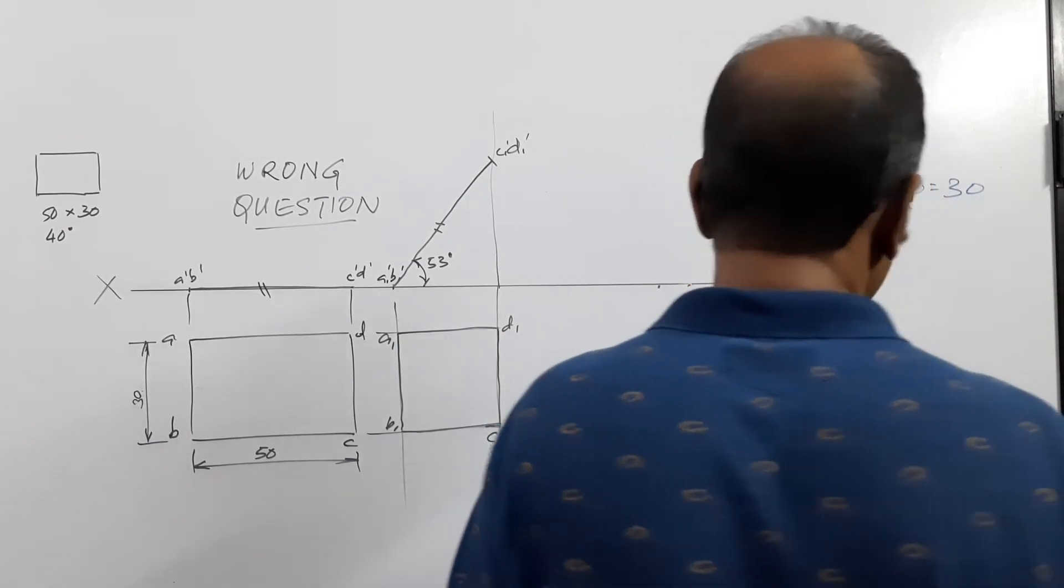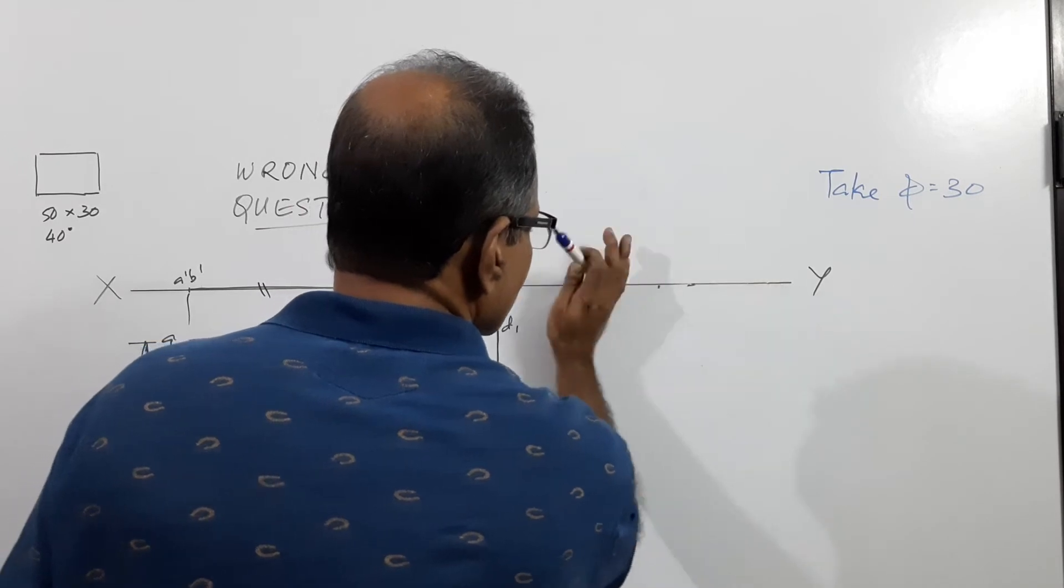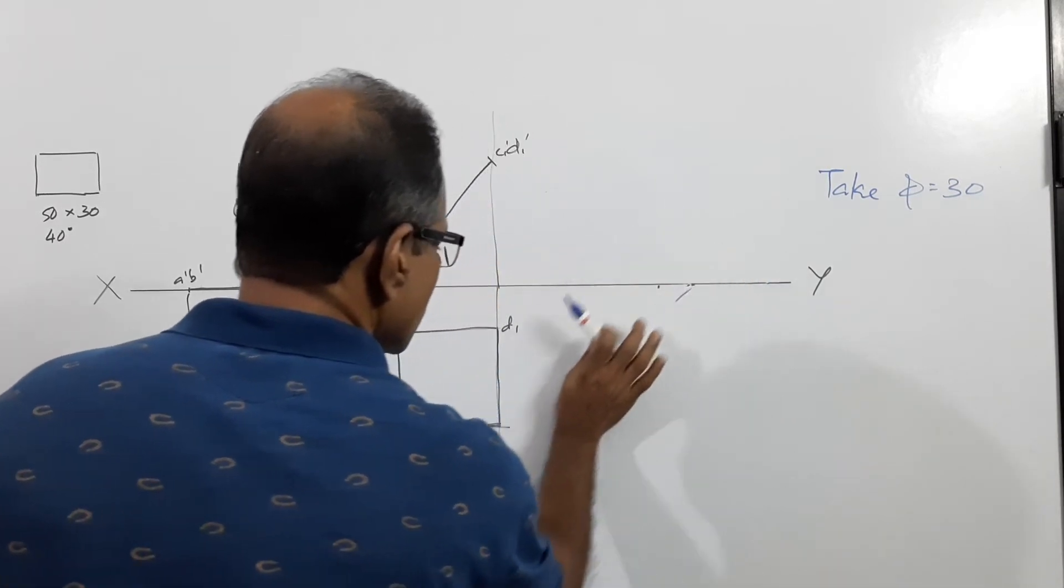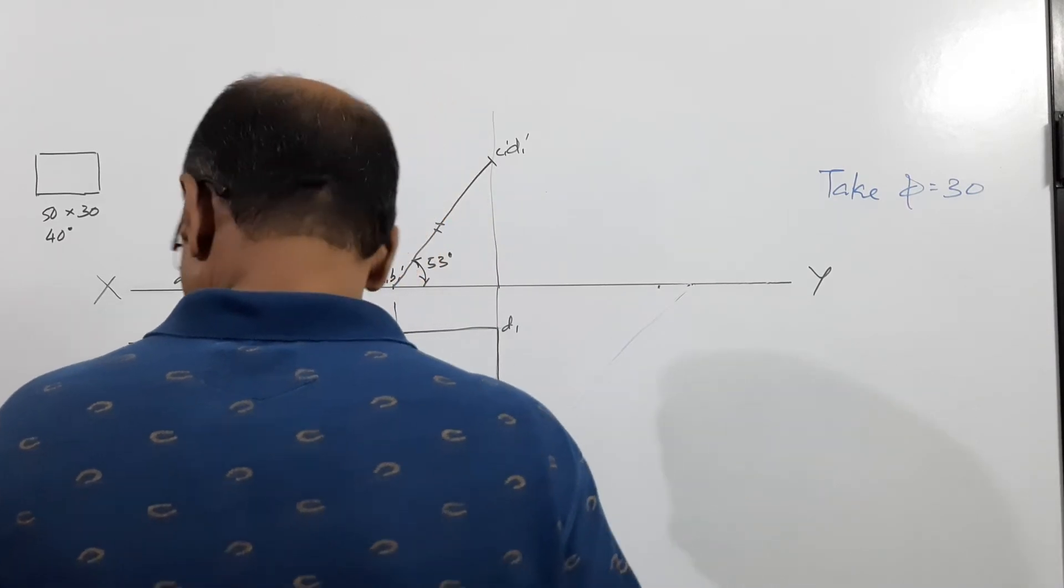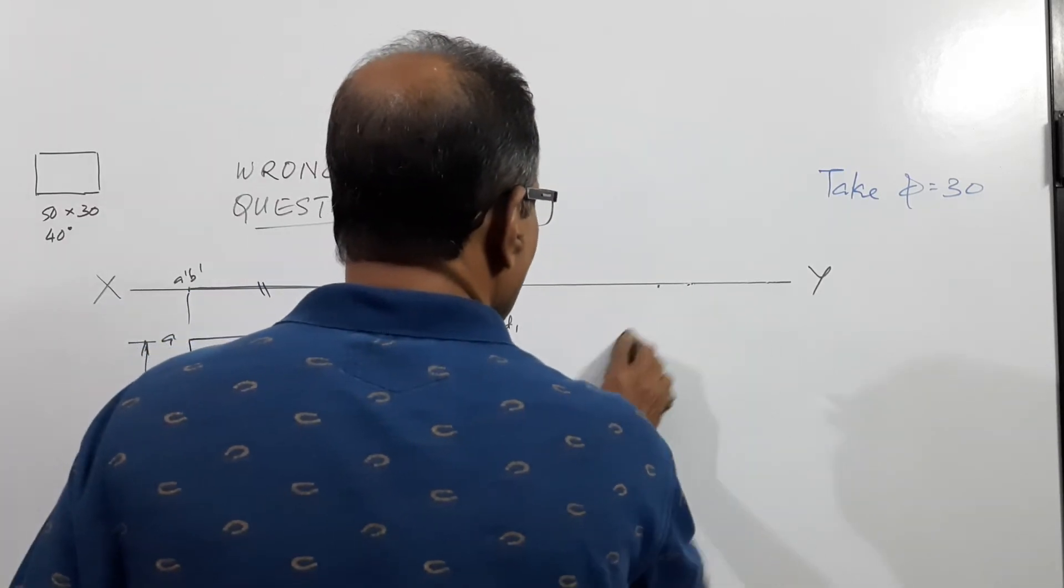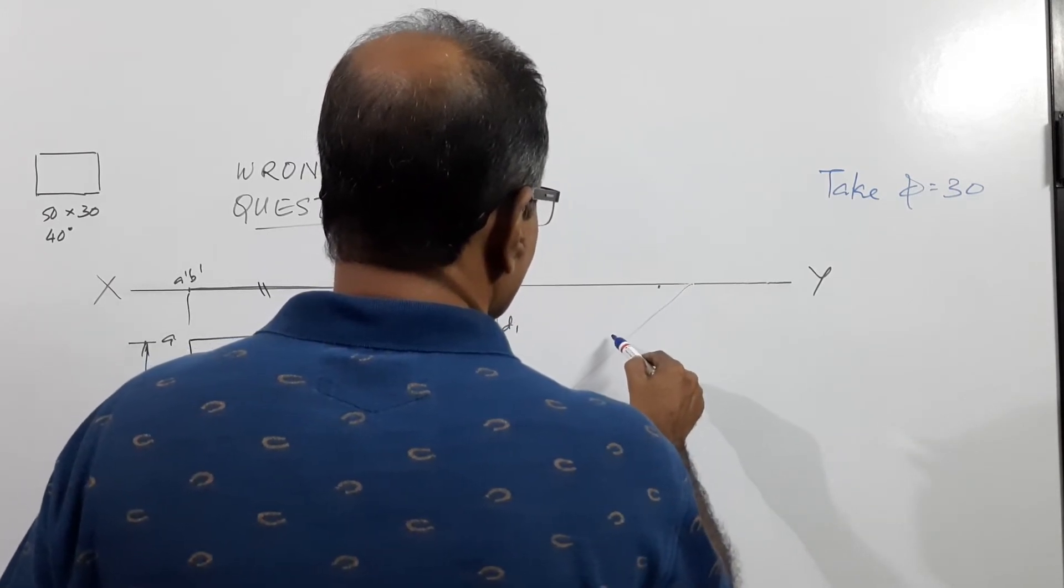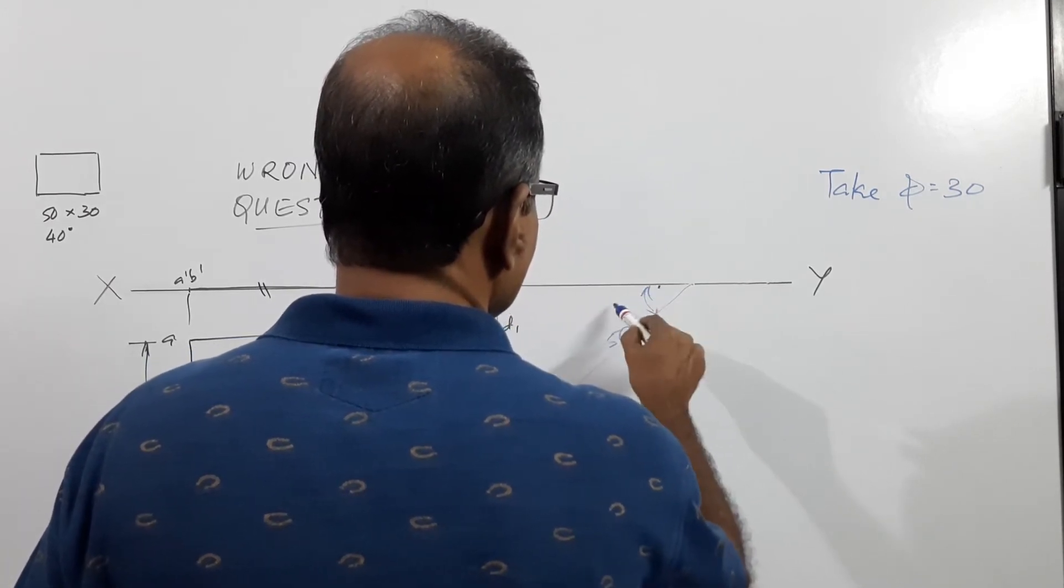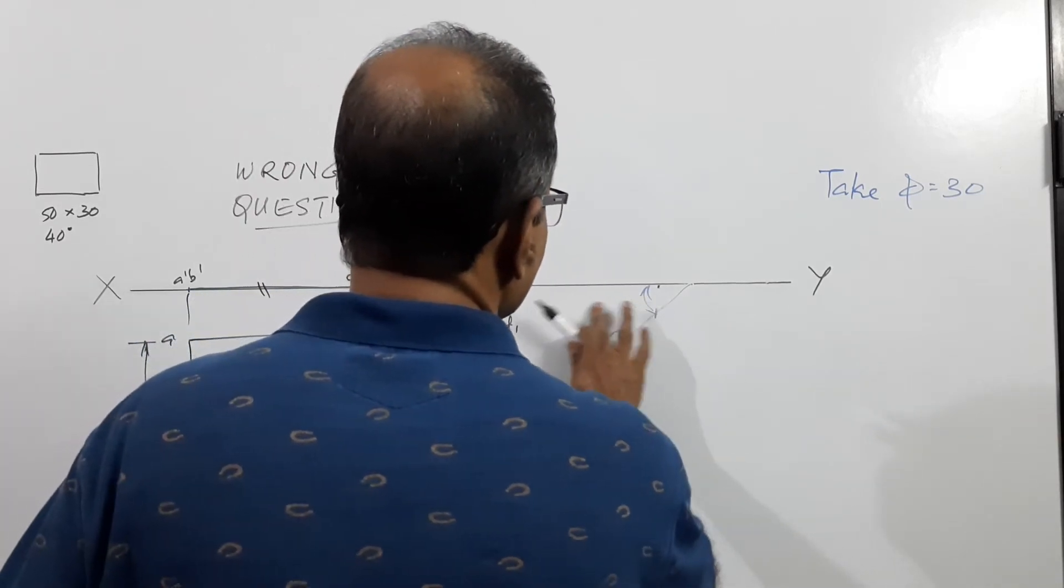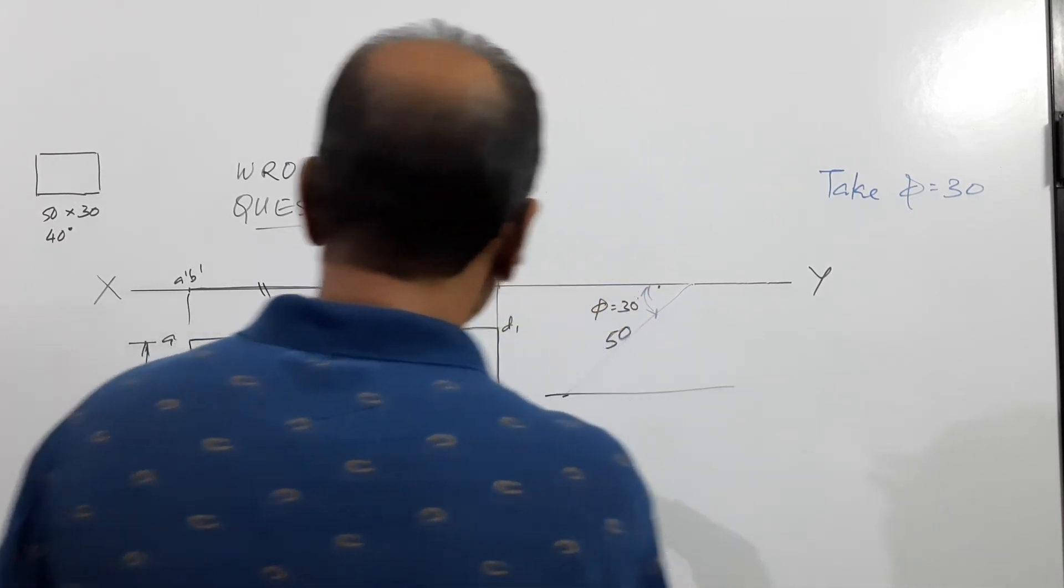Take phi equals 30 instead of 40. Take a point on XY line, draw a line. My problem is I have cleaned the board with a wet cloth so it is slippery now. This angle is phi equals 30. I am taking phi equals 30. This is 50, this is 50. Take the locus drawn up, then take the plan length and cut.